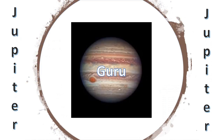After Mercury, we have Jupiter. It is called Guru or Brihaspati in Sanskrit. The polarity of Jupiter is considered as male, and Jupiter is considered to possess Sattva Guna.